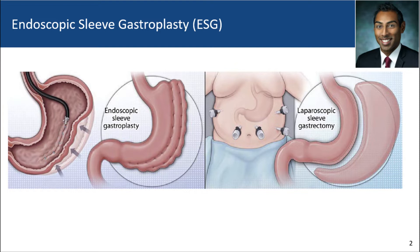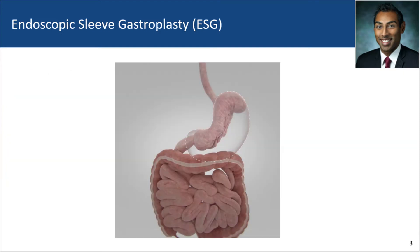The ESG does not involve resection of tissue, but rather the greater curvature aspect of the gastric body and fundus is plicated in a series of layers such that the gastric volume is also reduced by approximately 70%. There is some initial data to suggest that compared to the laparoscopic sleeve gastrectomy where gastric motility is increased, gastric motility might actually be decreased in the ESG. Another important difference is that there is some residual fundus that remains in the ESG procedure.